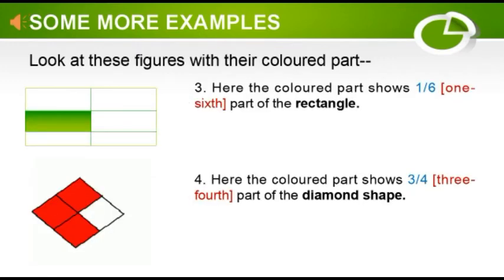In the third example, this rectangle has been divided into six equal parts from which only one part is colored. This fraction may be expressed as one by six and read as one sixth. In the last example, the diamond shape has been divided into four equal parts and three parts combined together represent three fourths, expressed as three by four.